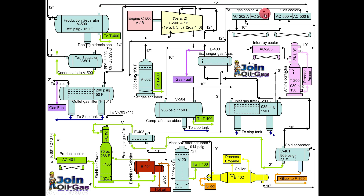The gas separated from the production separator is going to the process gas coolers, where the gas is cooled down. After the coolers, the gas moves to the inlet gas scrubber. Here, any condensate or liquid that is separated from the gas will be removed, and all the liquid separated here will be sent to the condensate stabilization unit.